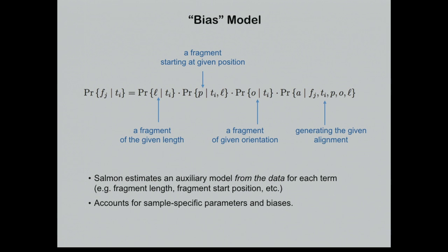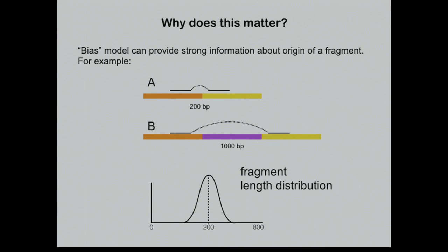Salmon estimates this bias model from the data for each run. For example, if over time you observe fragments and learn a fragment length distribution — an insert size distribution — you give a higher likelihood probability to locations consistent with that distribution. So the bias model can provide a lot of information.